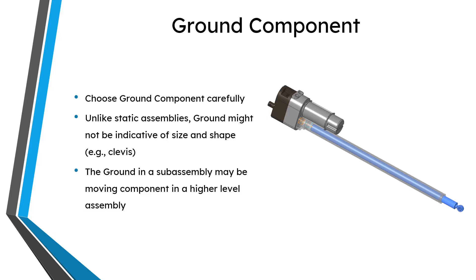In this image, I have a linear actuator and the brown component on the left would be the ground component in this particular subassembly. That little protrusion on the left-hand side of the brown component has a small hole through it. When this linear actuator is assembled in a higher-level assembly, it would have a pin connection through that small hole. Even though it's the ground component — the static component in its own subassembly — it would be moving in a higher-level assembly. That's something to take into consideration.